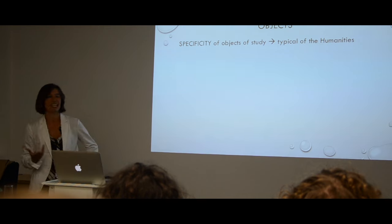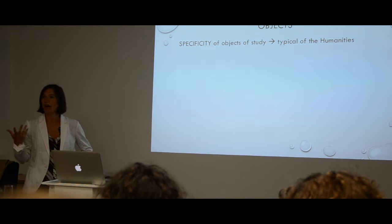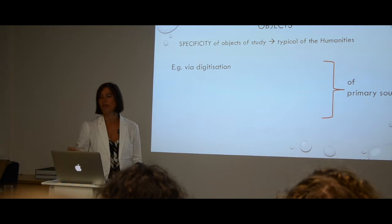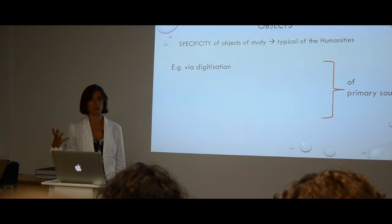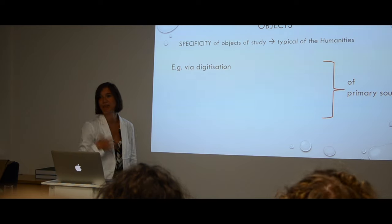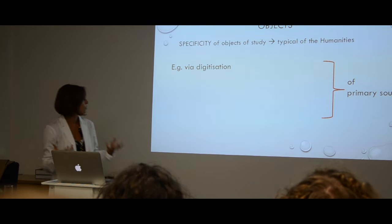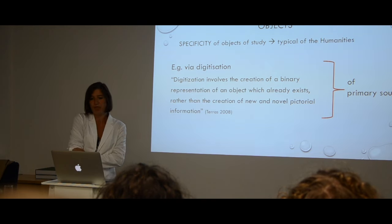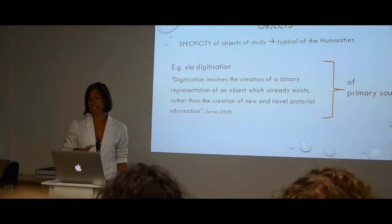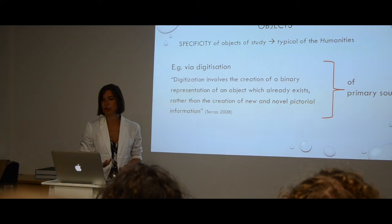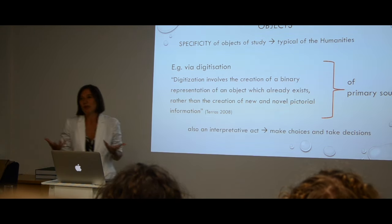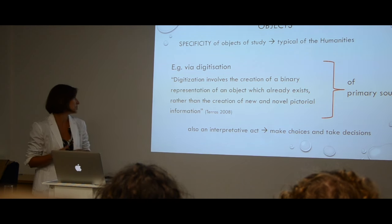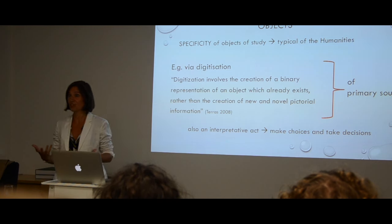First of all, of course, we point these lenses towards our object of analysis. This is very fitting to the purpose of the humanities itself — the specificity of the objects we study. One of the ways in which we examine closely our object is via the digitization of primary sources. Using Tara's definition of what digitization is: digitization involves the creation of the binary representation of an object which already exists, rather than the creation of new and novel pictorial information. But of course we also know that there are interpretive decisions involved — so it is an interpretive act as well, and we make choices and take decisions in this digitization approach.